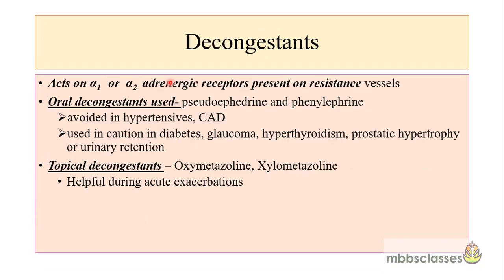The second group of drugs given in allergic rhinitis is decongestants. These are available both in oral and topical forms and act on alpha-1 and alpha-2 adrenergic receptors present on the resistance vessels. The oral decongestants used are pseudoephedrine and phenylephrine, but they should be avoided in hypertensives and patients with coronary artery disease. The topical decongestants occasionally given are oxymetazoline and xylometazoline. The topical forms are more helpful during acute exacerbation and found to be more efficacious than systemic decongestants as they do not have systemic side effects.